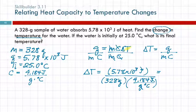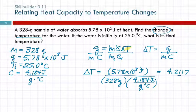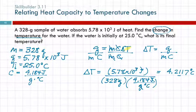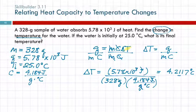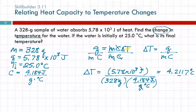How many sig figs? Three. So 4.2117 degrees Celsius. If you didn't come up with 4, do this again: 5.78 EE3 divided by, open parentheses, 328 times 4.184, close parentheses, press equals — 4.2117 degrees Celsius. Either method is fine; use the one that makes more sense to you.